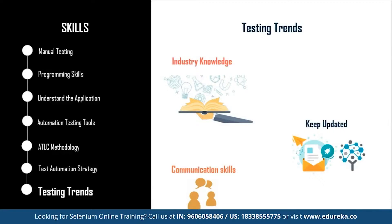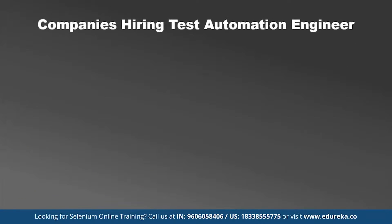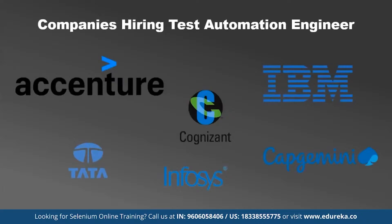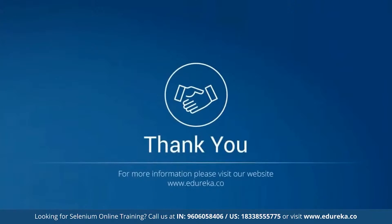Once you have mastered these skills, you are on your way to becoming a successful software test automation engineer. Some of the top companies hiring for test automation engineers are Accenture, IBM, Cognizant, Infosys, TCS, and Capgemini. Keep an eye out for opportunities and utilize your skills to grab the offer. I hope today's session helps you prepare and get well versed with all the skills to become a successful test automation engineer. Thank you and happy learning.